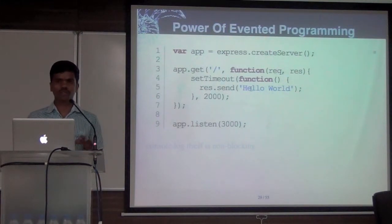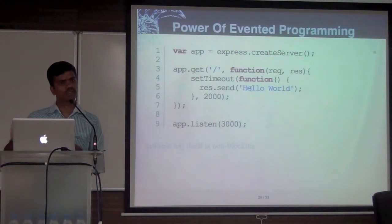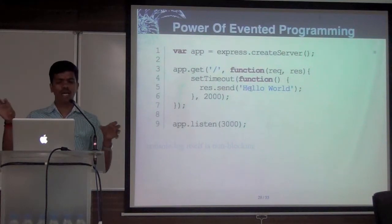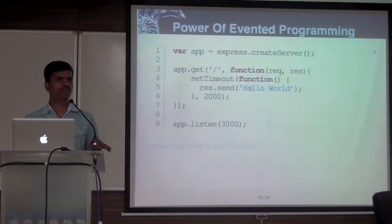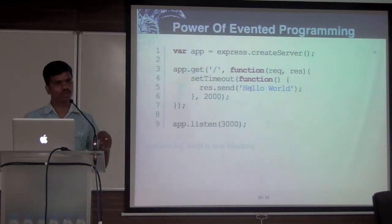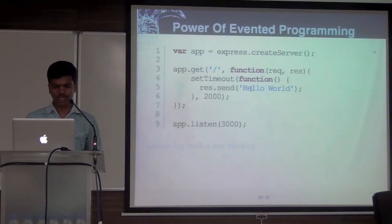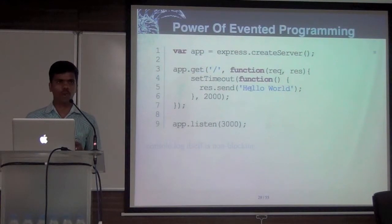Thousands of requests come in. I'm routing all the requests, delegating them. There will be 1000 events running in parallel. Each and every event will send hello world to the client simultaneously. That's the power of the event loop.